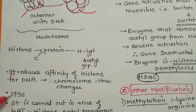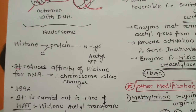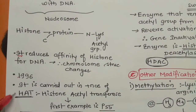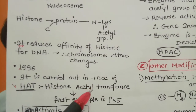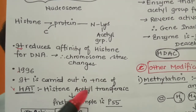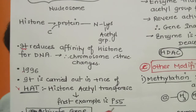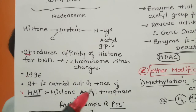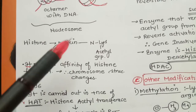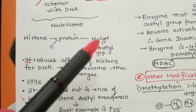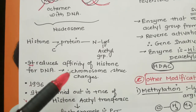This concept of acetylation of histone was first coined in the year 1996. For acetylation - to add the acetyl group - an important enzyme is needed that transfers the acetyl group. Acetylation is carried out in the presence of the enzyme HAT - Histone Acetyl Transferase. The first example of HAT is the molecule p55. p55 is one example of histone acetyl transferase. This enzyme transfers the acetyl group onto the histone's N-terminal end where the lysine residue is present, thereby modifying the histone.